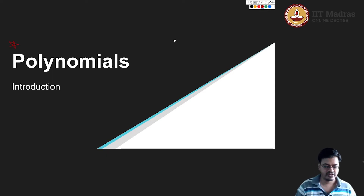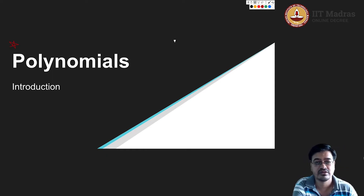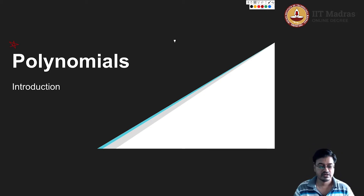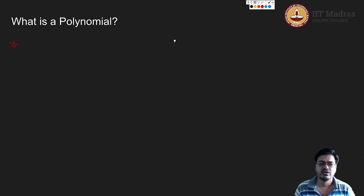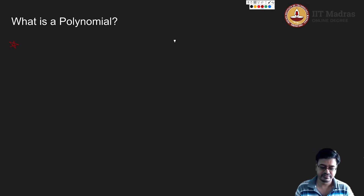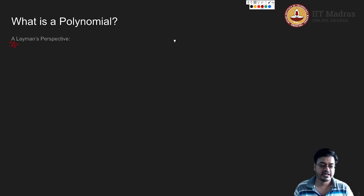Let us introduce polynomials. Today we are going to see how polynomials look like and how they behave. So let us start with polynomials and see what expressions we call as polynomial. For that, let us take a layman's perspective and try to understand what a layman will think of a polynomial.